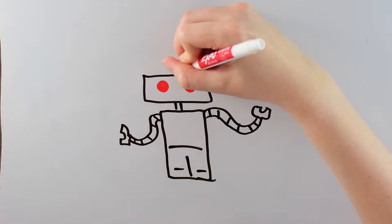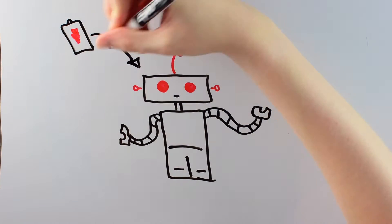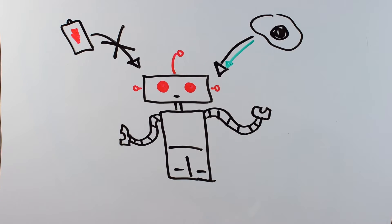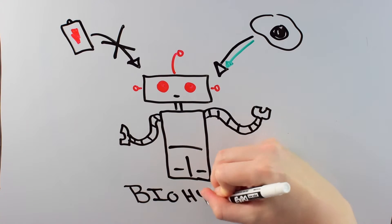The other special thing about this robot is how it's powered. Instead of using batteries, it uses biology. Real living cells are used to power this robot, which is why it has the name bio-hybrid.